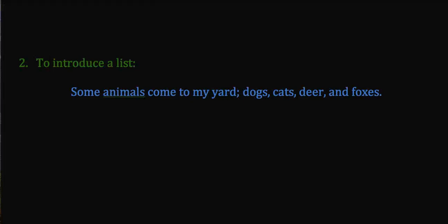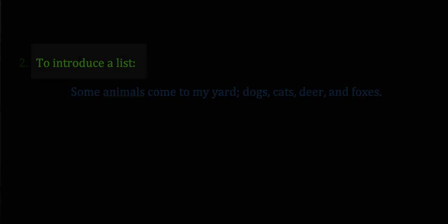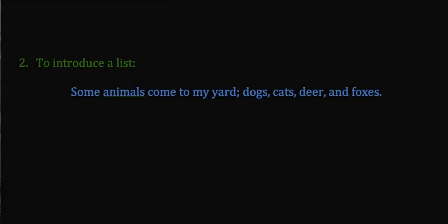The second misuse is when a semicolon is used to introduce a list. For example: 'Some animals come to my yard; dogs, cats, deer, and foxes.' Right here, the semicolon is a misuse — it should be a colon. There's a separate tutorial on how to use a colon. What's going on here is a complete sentence, that's good, but what follows is not a complete sentence — they are examples, specifics, a list of what comes before. 'Some animals' is the general word, and then we get the specifics. The proper punctuation is a colon, not a semicolon.